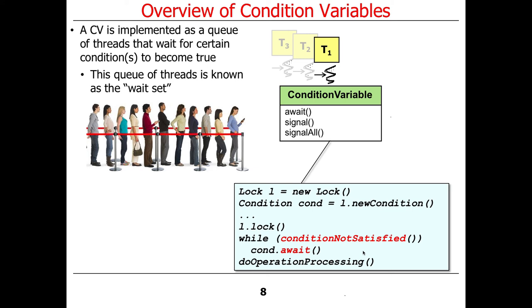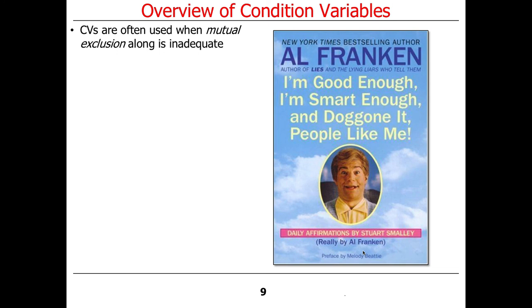The queue of threads that are waiting for their turn to run are often called the wait set. It's kind of a funny name, but when people talk about the wait set, that's what they mean. They mean a queue of threads that are waiting for their chance to run. Condition variables are often used when mutual exclusion alone is inadequate. And when I made these slides many years ago, it was kind of funny to remind us about Al Franken. Now all of a sudden he's not so funny anymore. But back in the day he was funny, and he would always feel inadequate if you ever watched his classic Stuart Smalley skit on Saturday Night Live.